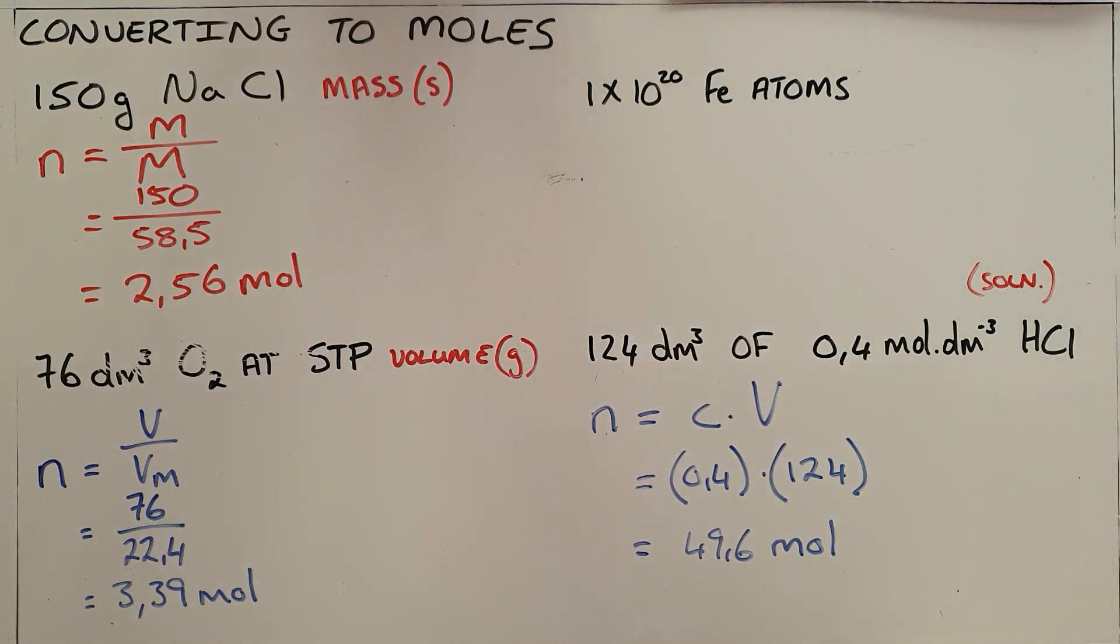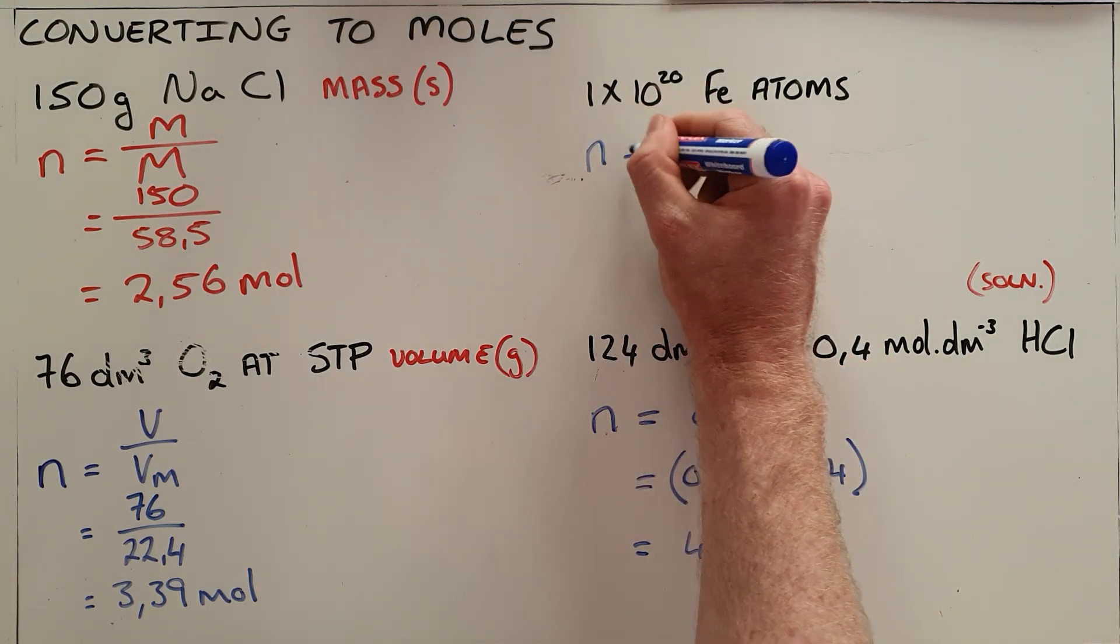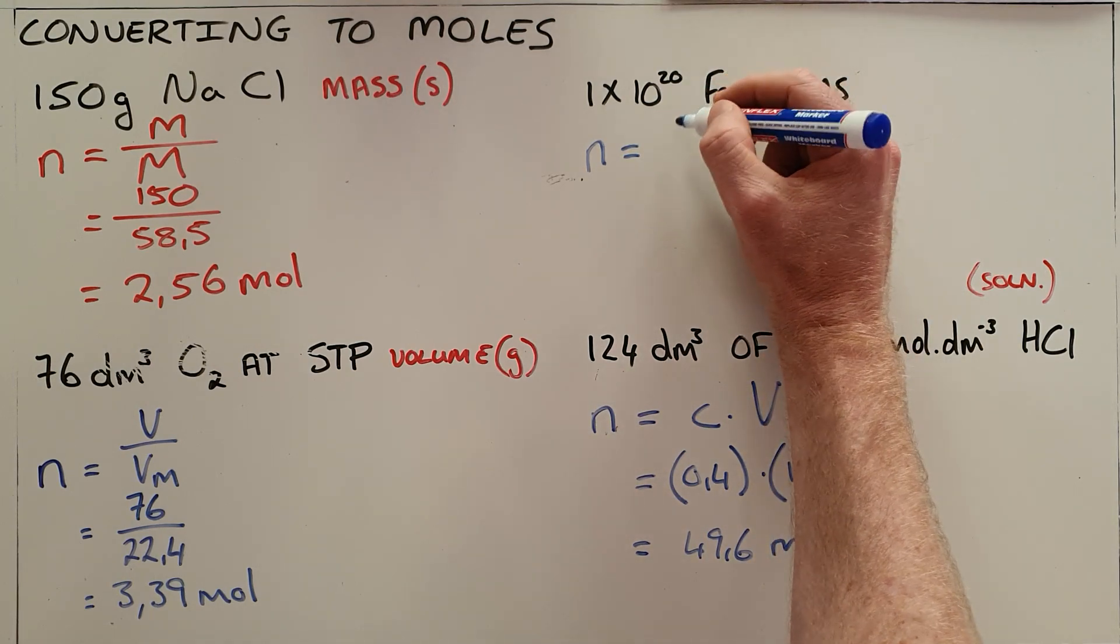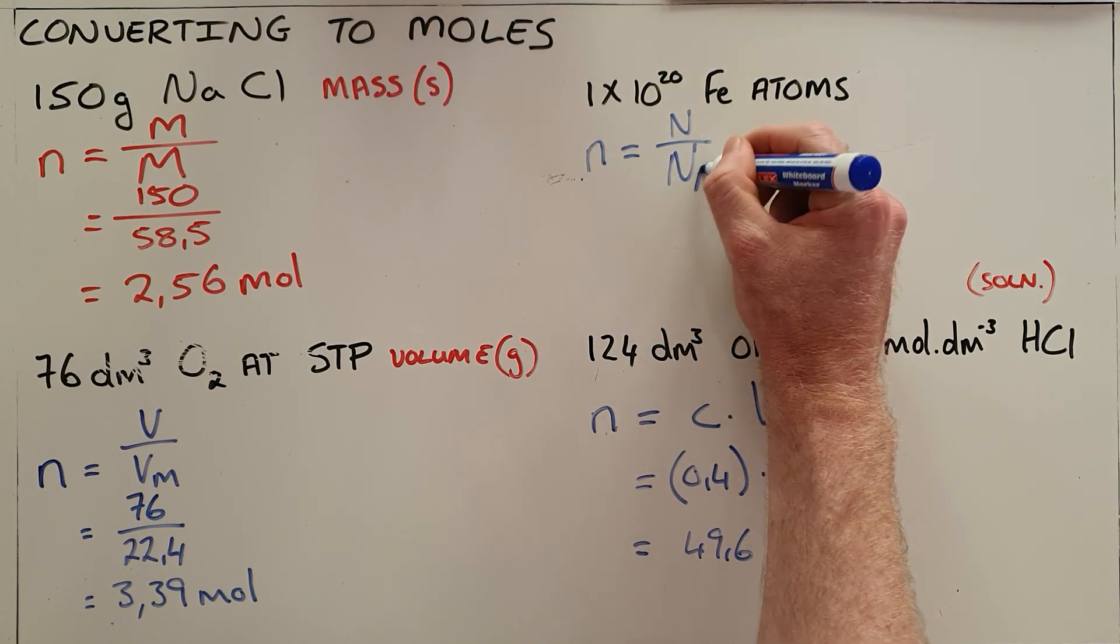The last one: when we are given a number of atoms, we can convert that into a number of moles by dividing it by Avogadro's number. So we say the number of atoms that were given divided by Avogadro's number, the number of particles in one mole.